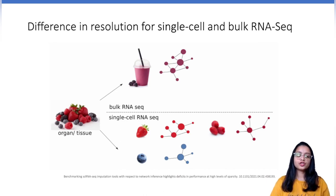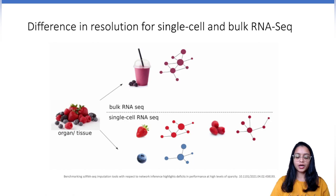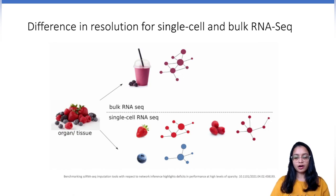Let's take an analogy of a fruit smoothie. We all have prepared a fruit smoothie where we start with a mixture of fruits and put it in a blender with other ingredients to get a fruit smoothie. This process is very analogous to generating bulk RNA-seq data — we start with a homogenized mixed source material.